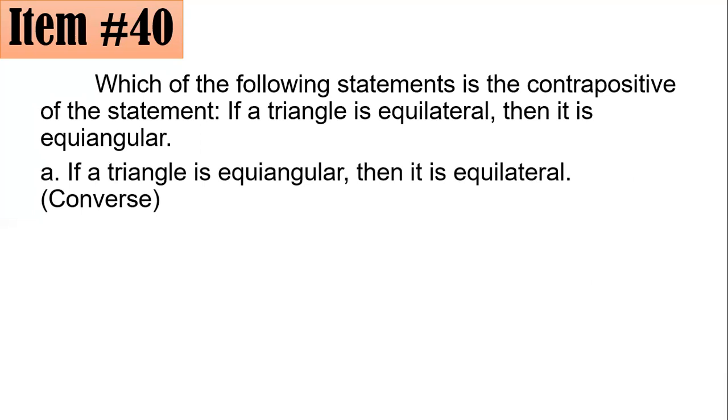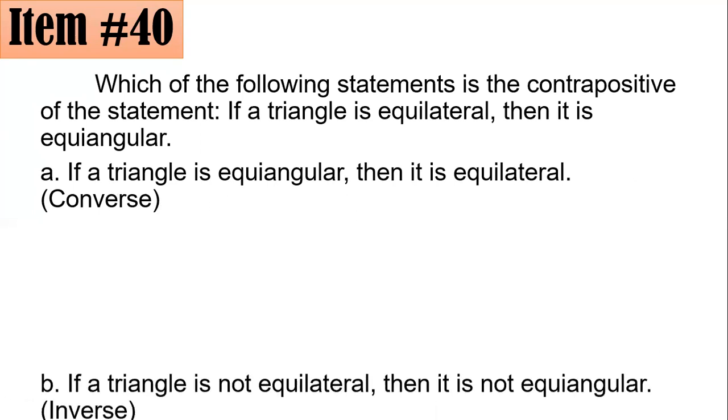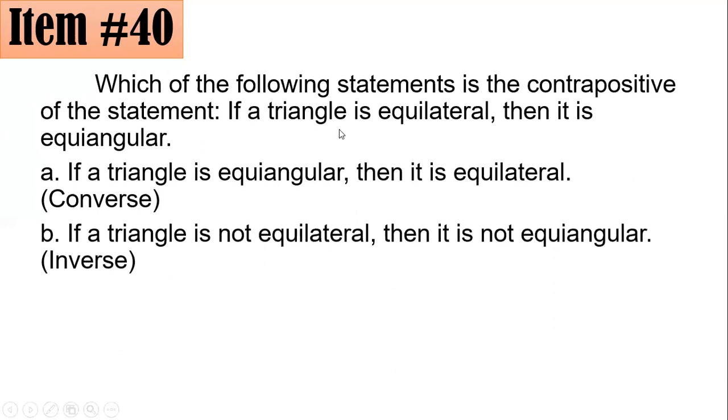When you have an if-then statement, if P implies Q, then if Q implies P, that's your converse. The inverse: P implies Q has an inverse of not P, not Q. That's why if a triangle is not equilateral, then it is not equiangular is the inverse.